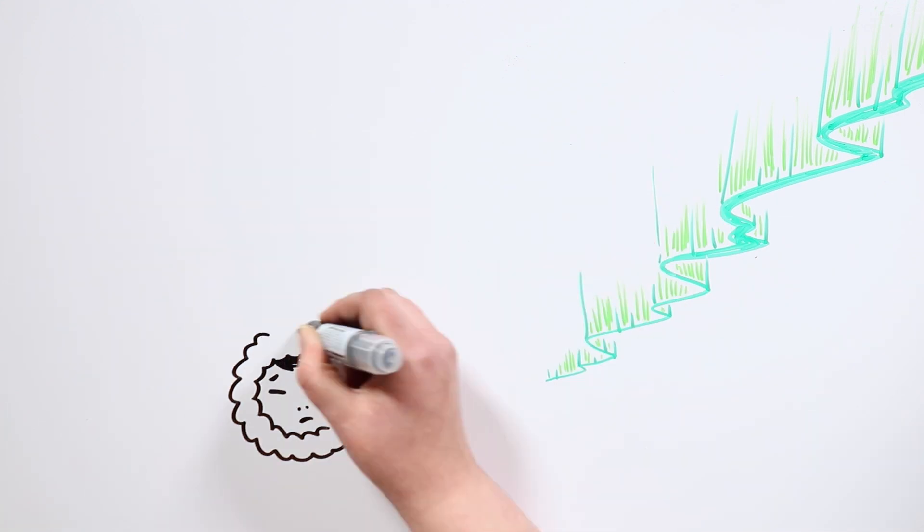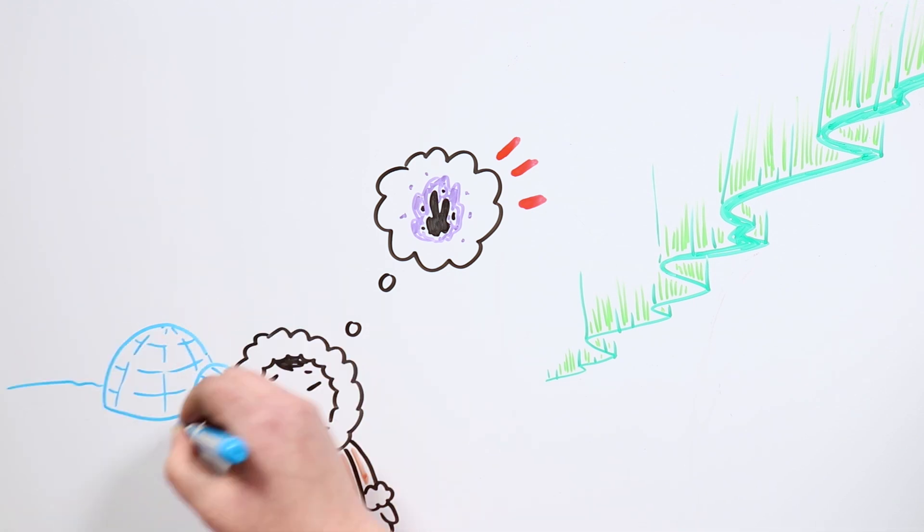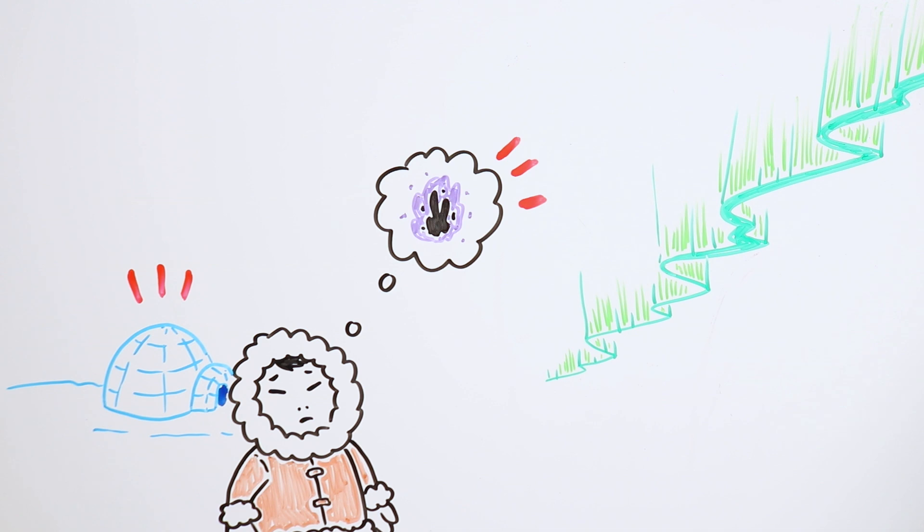For instance, the Eskimos believed that the lights were spirits that played in the sky, and that's why they didn't let their children go out at night, so that the spirits wouldn't take them away.